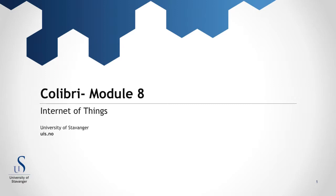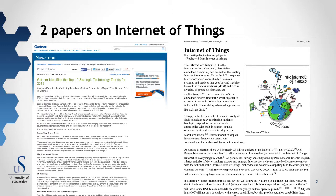Welcome to the Colibri project module 8 on applications and services. This introduction covers the internet of things, one of the three items in module 8 — a topic that is developing quite rapidly. There are two papers included in this module, and we have chosen these to give you an introduction to this important topic.